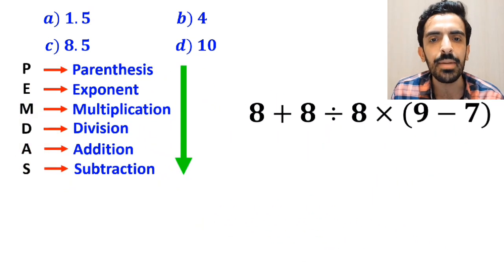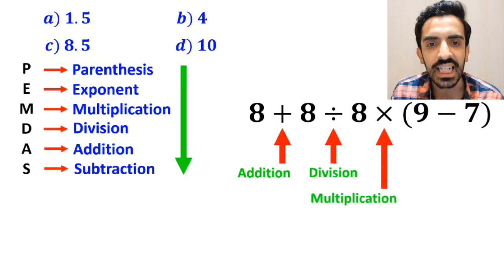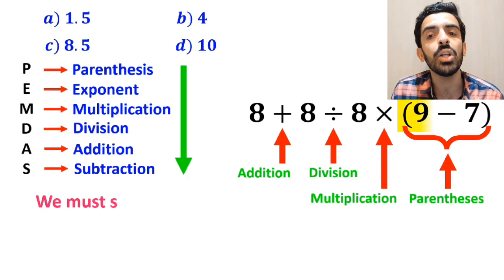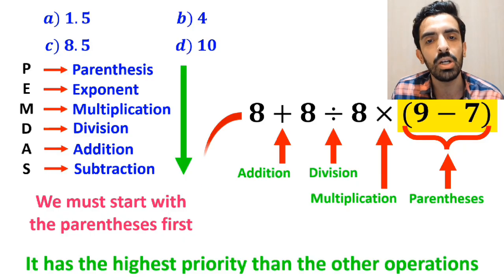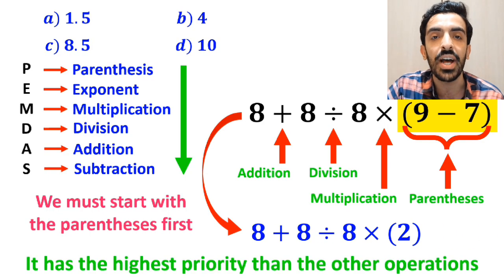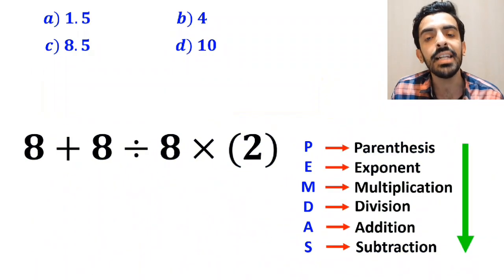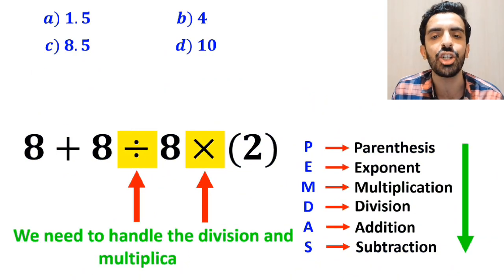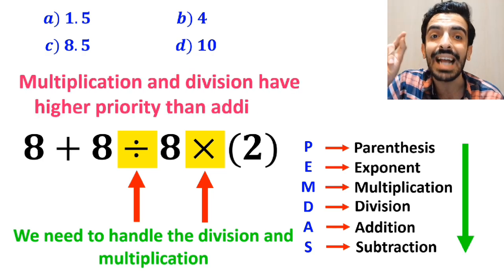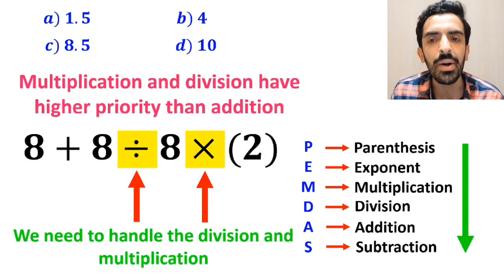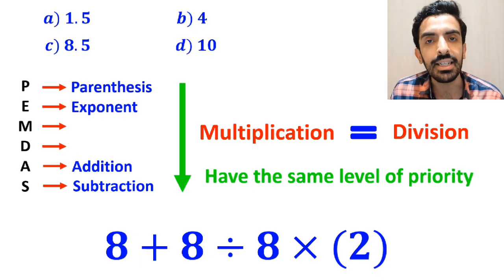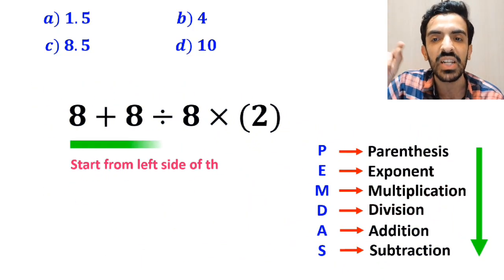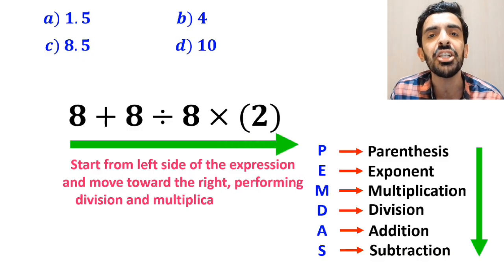As you can see in the image, this expression has an addition sign, then a division sign, followed by a multiplication, and finally parenthesis. We must start with the parenthesis first because it has the highest priority. So we can write 8 plus 8 divided by 8 times 2. In the next step we handle division and multiplication, which have higher priority than addition. It's important to note that in PEMDAS, multiplication and division have the same level of priority, so we move left to right performing division and multiplication in order.